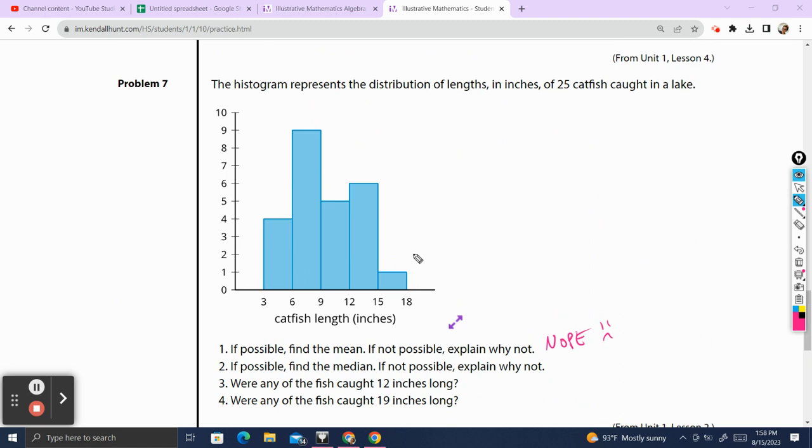Similarly, with the median, we can calculate which bundle the median is, but we can't actually calculate what it is. So I know if it's between six or 10 or 10, nine or 12, but we don't actually know what that median is.